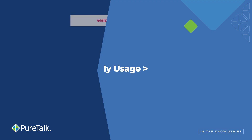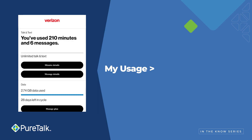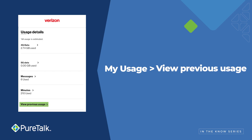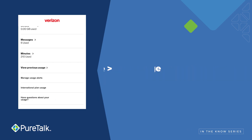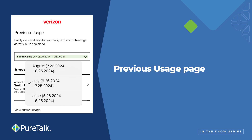On the My Usage page, you can see how much data you have used on your current billing cycle. To see the previous month's data, click on View Previous Usage. On the Previous Usage page, you can see how much data you've been using on your previous billing cycles.